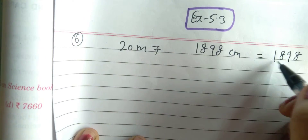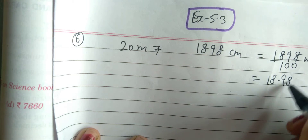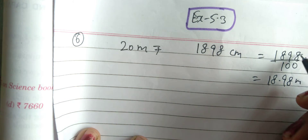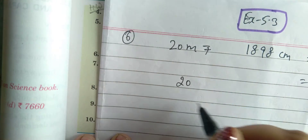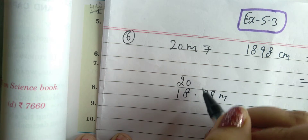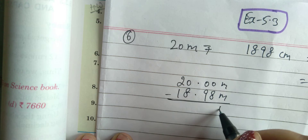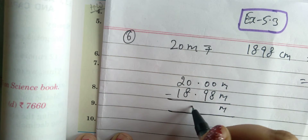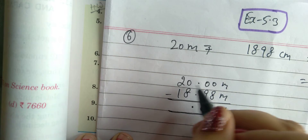Centimeter को meter में convert करने के लिए, divide by 100 करते हैं। Decimal लगा दो। 1898 centimeter को meter में convert करने पर 18.98 meter मिलेगा। अब ये दोनों meter में हैं। 20 में decimal नहीं है तो 20.00। माइनस करने पर carry लेंगे। 1.02 meter is your answer.